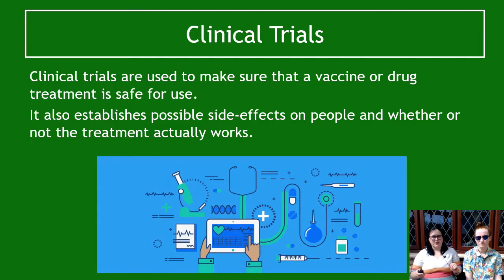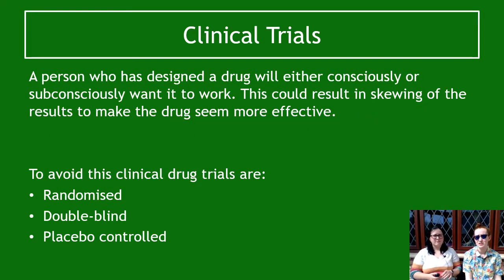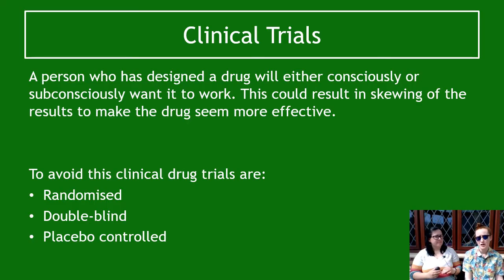When a person designs a drug, they will consciously or subconsciously want it to work. That could result in skewing of the results — you might interpret results to make it seem like it's working because it's your creation. So when planning clinical drug trials, there are certain things we can do to minimize any subconscious bias: making them randomized, having a double blind test, and involving a placebo.